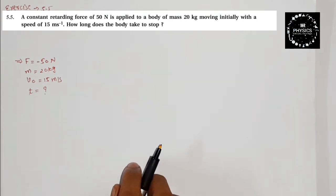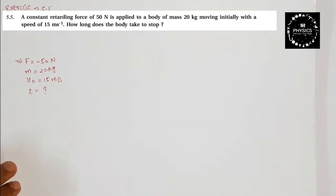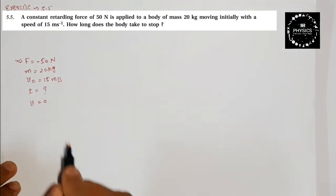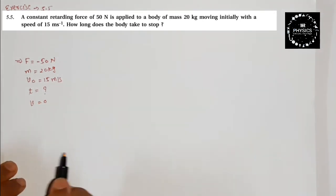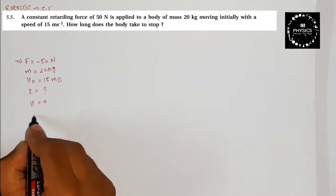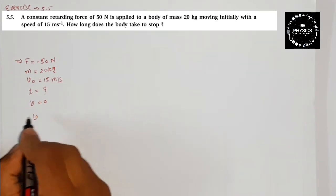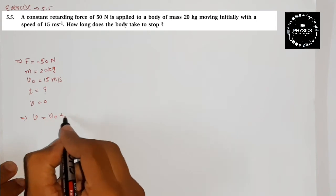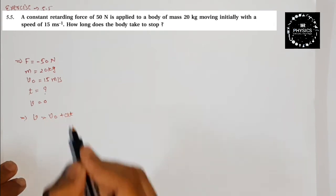For time, the final velocity is not given directly — but since the body stops, final velocity will be zero. To define time, we use the formula: v is equal to v₀ plus at.